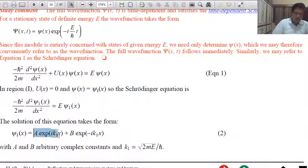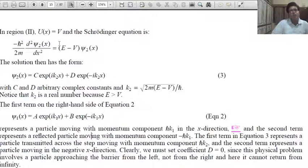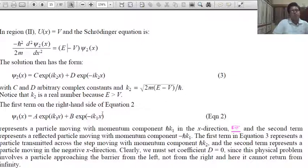The first term gives the incident wave and the second term gives the reflected wave at the step x = 0. In Region 2, U(x) = V: the Schrödinger equation gives E − V, and the general solution is ψ₂(x) = C·exp(ik₂x) + D·exp(−ik₂x), where C and D are arbitrary complex constants and k₂ = √(2m(E−V))/ℏ.